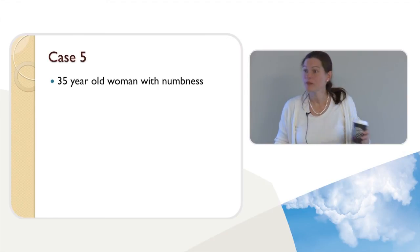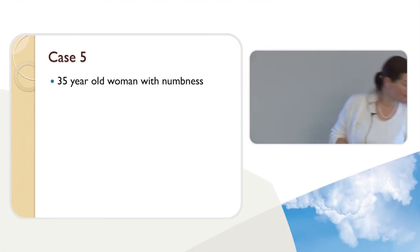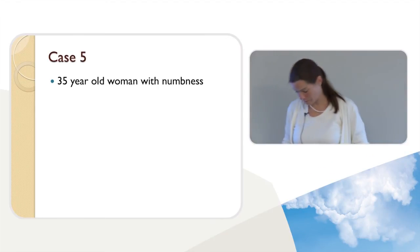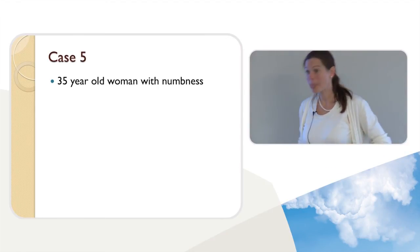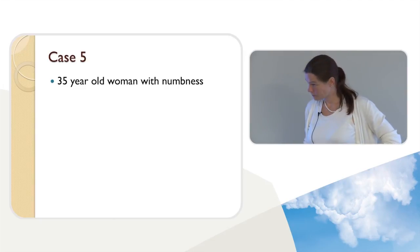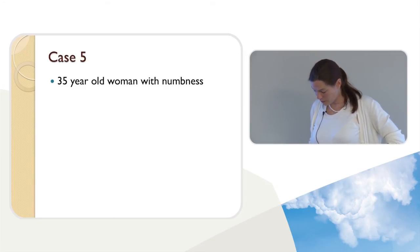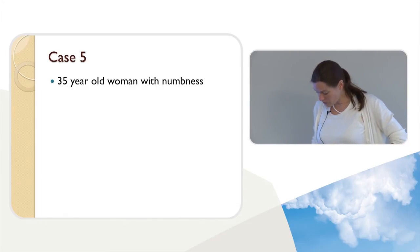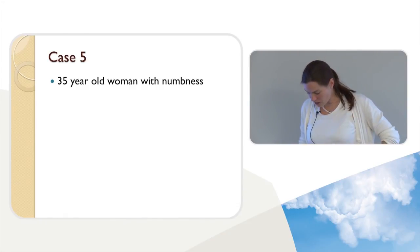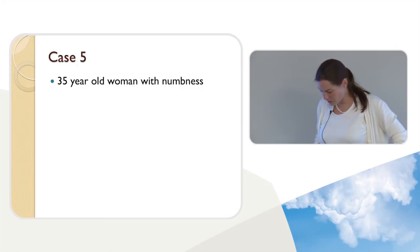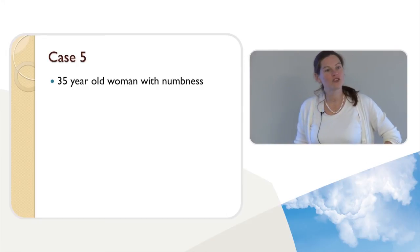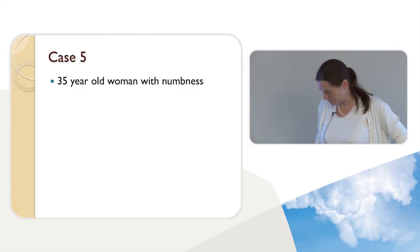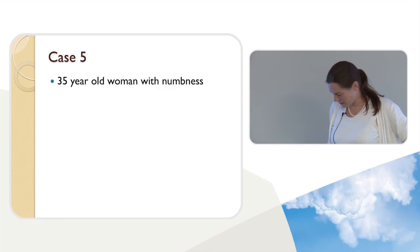Weakness? Yes, she also has some weakness on that side. Does she have any other symptoms? No, otherwise she's completely fine, just a bit worried. Any visual symptoms? She does not have any visual symptoms now, but she did have an event five years ago when she had a bit of visual blurring.